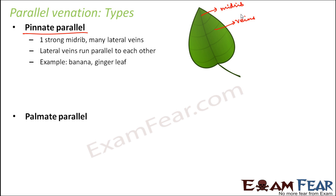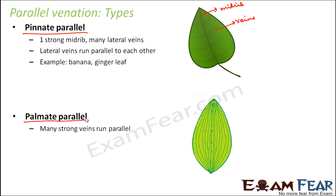An example of pinnate parallel venation is a banana leaf or a ginger leaf. In palmate parallel, there are many strong ribs, and the lateral veins are also parallel to each other. So many strong veins run parallel to each other. Looking at this example, all the lines visible are strong veins running almost parallel to each other — this is palmate parallel.